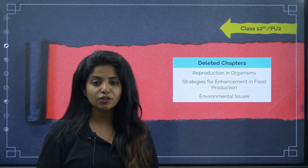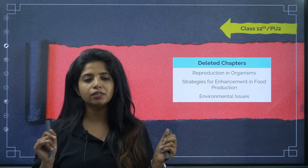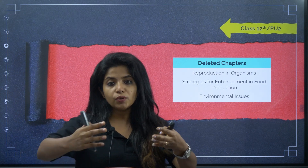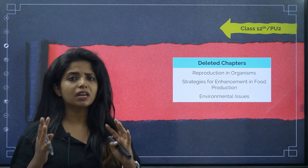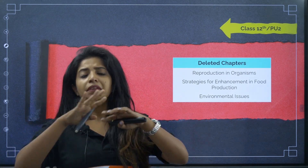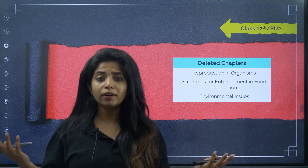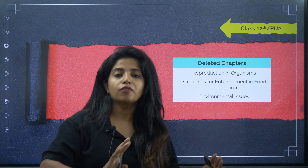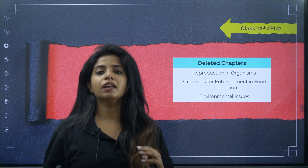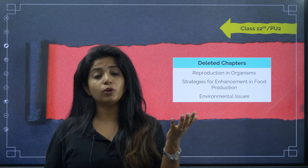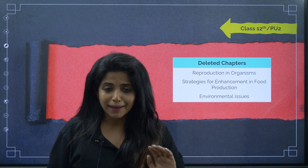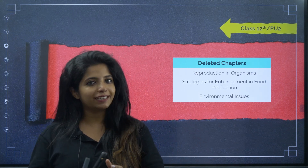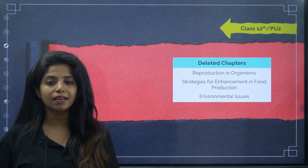Now I want to talk about something very important — deleted chapters. This slide is very important because at times you borrow books from people who just passed out. They do not have the rationalized content; the NCERT team cut down things that are not needed anymore and gave a new rationalized content book. If you've borrowed a book, it's great because you get additional notes, but you need to know what is deleted.